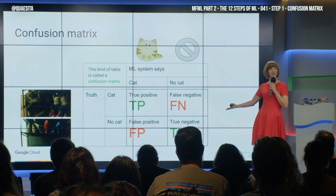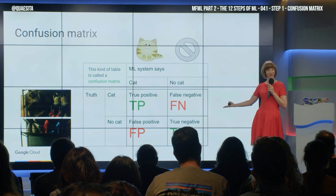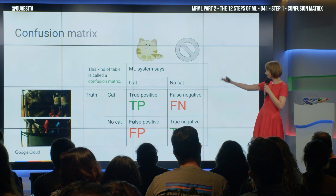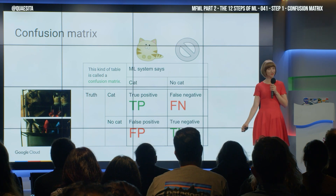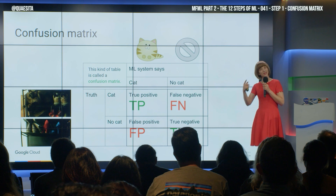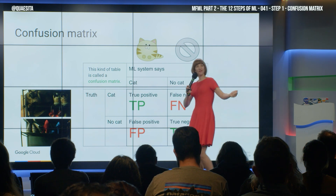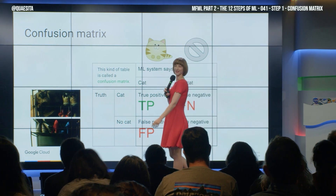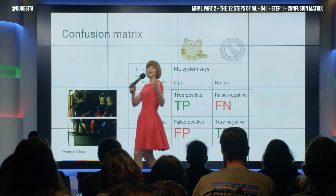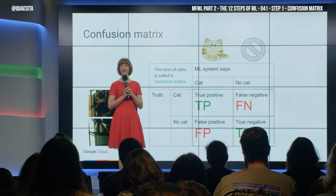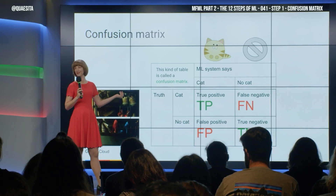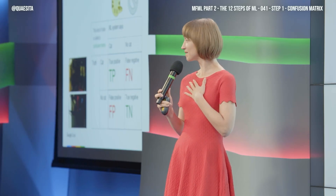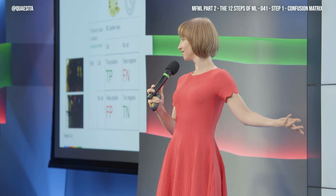And then you realize it's just this? Like, seriously? Just a two by two table of what happened versus what should have happened? And then you realize that this is all of machine learning. The names are just so fancy, and when you look at what's under the hood, you're like: are you kidding me? I was intimidated for years by this?